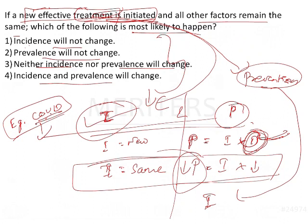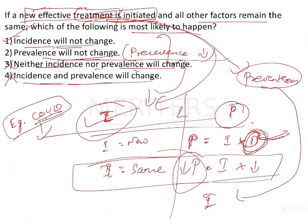So now coming to the options. Incidence will not change - yes, it won't change. Prevalence will not change - no, prevalence will reduce. Neither incidence nor prevalence will change - no, this is wrong. Incidence and prevalence will change - no, this is also wrong. Here is also wrong.